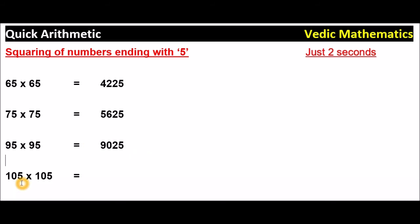105 times 105. 5 times 5 is 25. The number is 10 here, and what is the number after 10? 11. So 10 times 11 equals 110. The answer is 11,025.